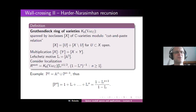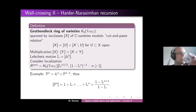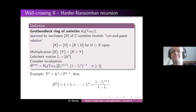So this is the Grothendieck ring of varieties with a sample calculation. Maybe this is a good point to have a five-minute break. So Jens had a question — Jens, you can ask your question now.